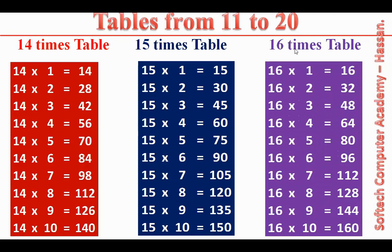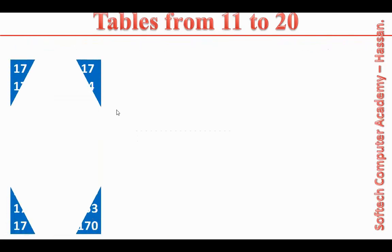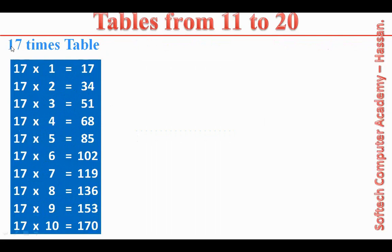16 times table. 16 ones are 16. 16 twos are 32. 16 threes are 48. 16 fours are 64. 16 fives are 80. 16 sixes are 96. 16 sevens are 112. 16 eights are 128. 16 nines are 144. 16 tens are 160.